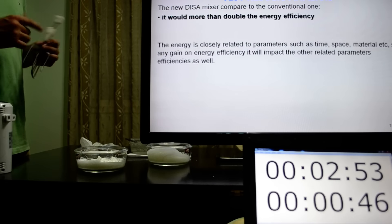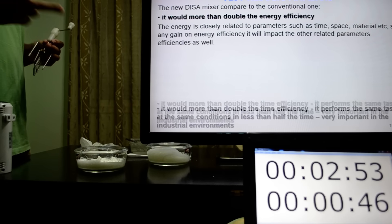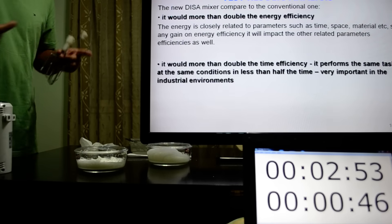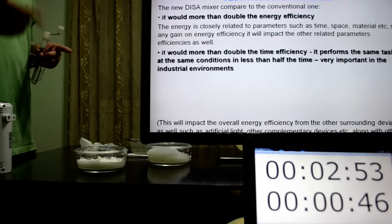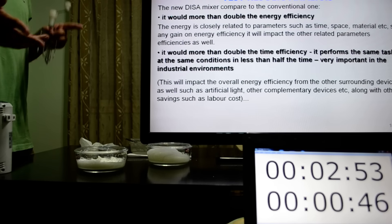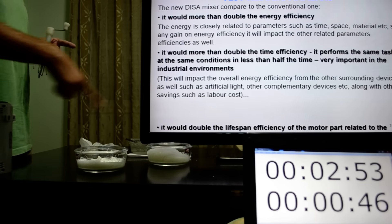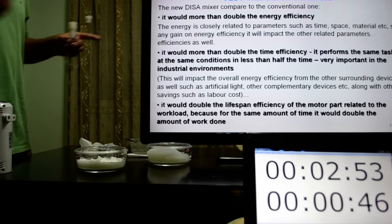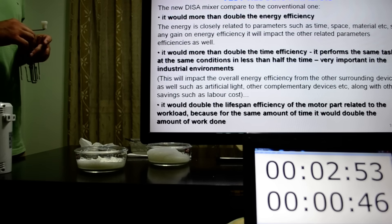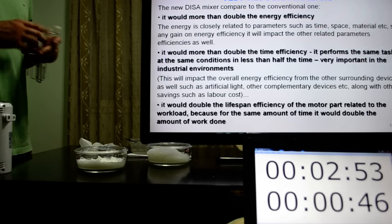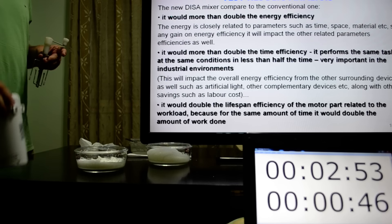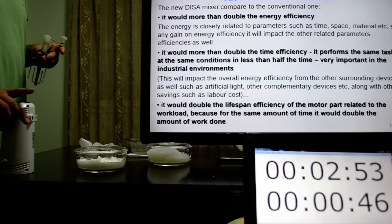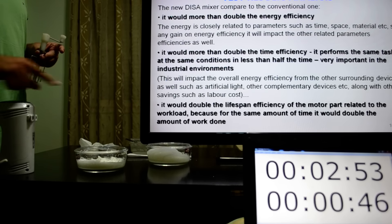The new design makes a competitive commercial one. It would more than double the energy efficiency. But because energy is closely related to other parameters such as time, space, material, etc., it would more than double the time efficiency. It would perform the same task at the same conditions in less than half the time, and it's very important in industrial environments. In the end, it would double the lifespan efficiency of the motor part related to the workload, because for the same amount of time, it would double the amount of work done.